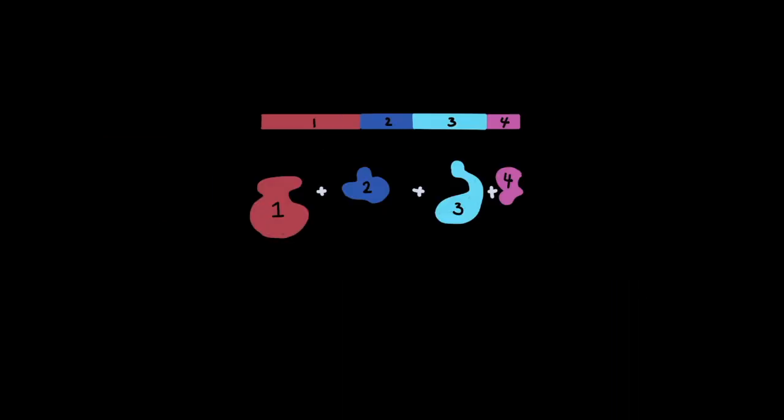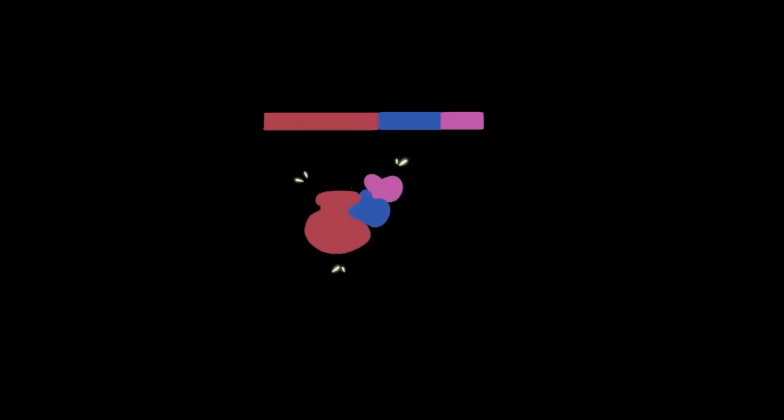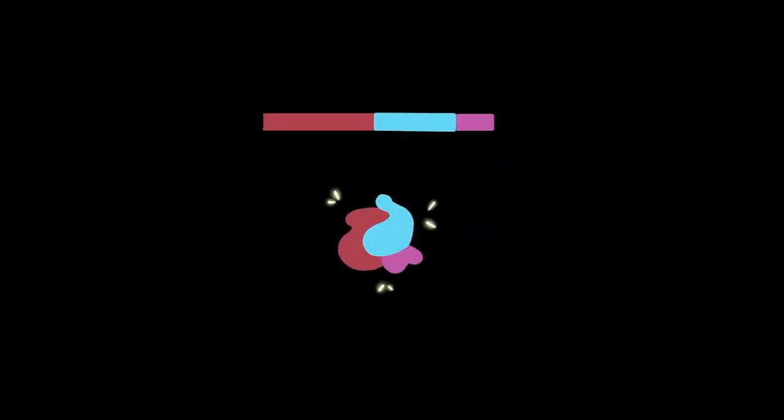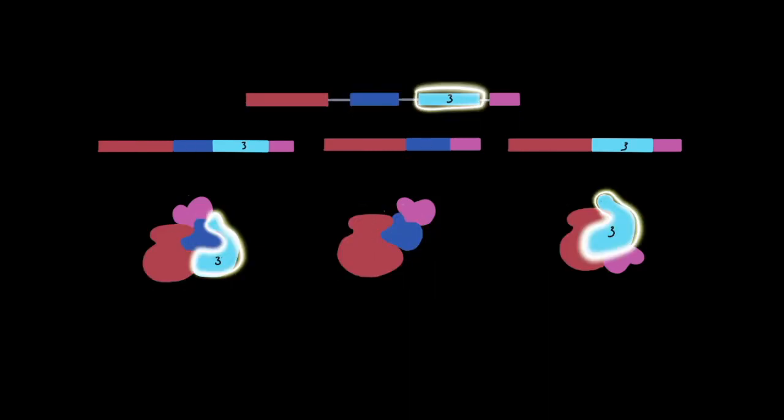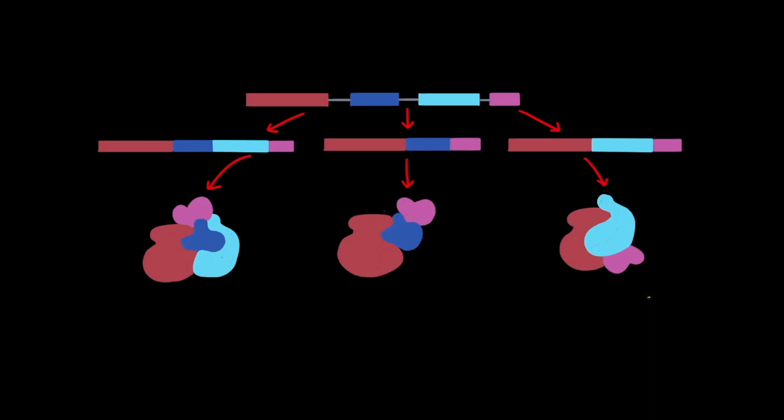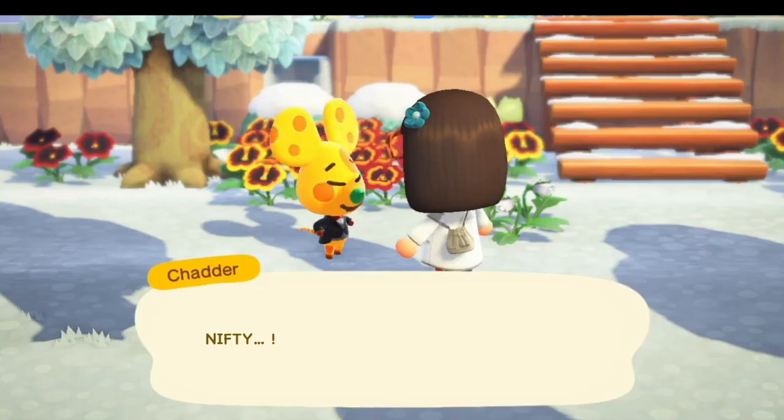Look at the first example again. Each exon encodes a subunit, and they aggregate to form a four-part protein. The second example with three coding regions makes a three-part protein. Lastly, this transcript has three different exons, and a different protein is translated. We can see that from one pre-mRNA, three different mature mRNAs are alternatively spliced, which translates into three different proteins. Each protein subunit originates from the corresponding exon. The more splicing junctions, the more alternative splicing combinations. Nifty!